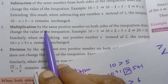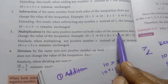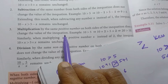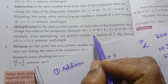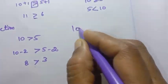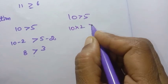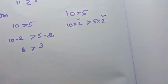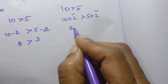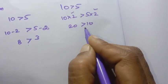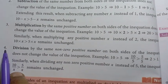Multiplication: multiplication by the same positive number on both sides of the inequation does not change the value of the inequation. So multiplying does not change the symbol. For example, 10 is greater than 5. If the same positive number, say 2, is multiplied: 10 into 2 is greater than 5 into 2, so 20 is greater than 10. The inequation does not change.